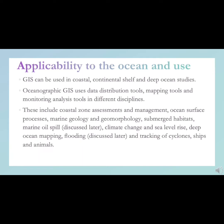GIS can be used in coastal, continental shelf, and deep ocean studies. Oceanographic GIS uses data distribution tools, mapping tools, and monitoring analysis tools in different disciplines. These include coastal zone assessment and management, ocean surface processes, marine geology and geomorphology, submerged habitats, marine oil spills, climate change and sea level rise, deep ocean mapping, flooding, and the tracking of cyclones, ships, and animals.